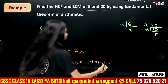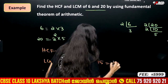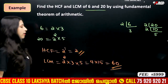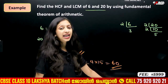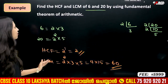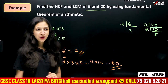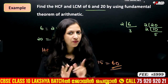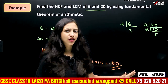The highest power of 2 is 2 squared, 3 is 3 to the 1, and 5 is 5 to the 1. So LCM is 4 into 15, which equals 60. HCF is 2 and LCM is 60. Prime factorization is straightforward.